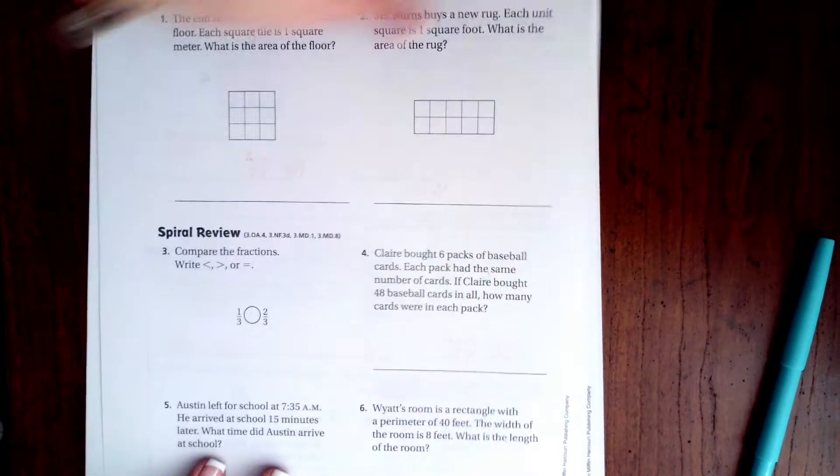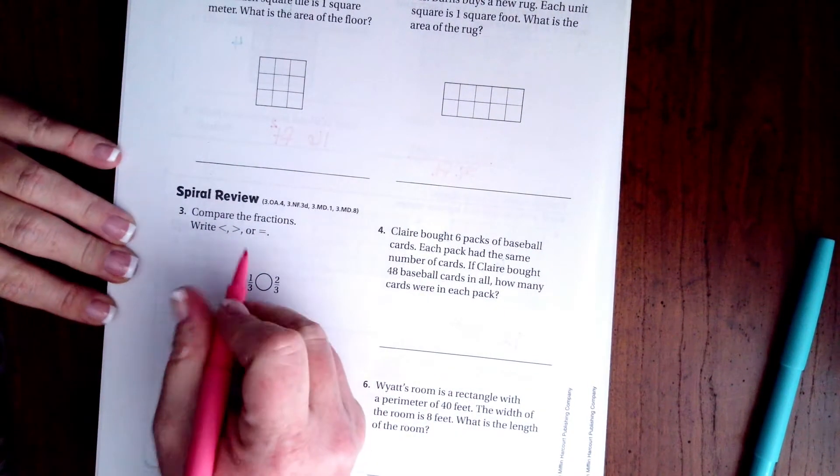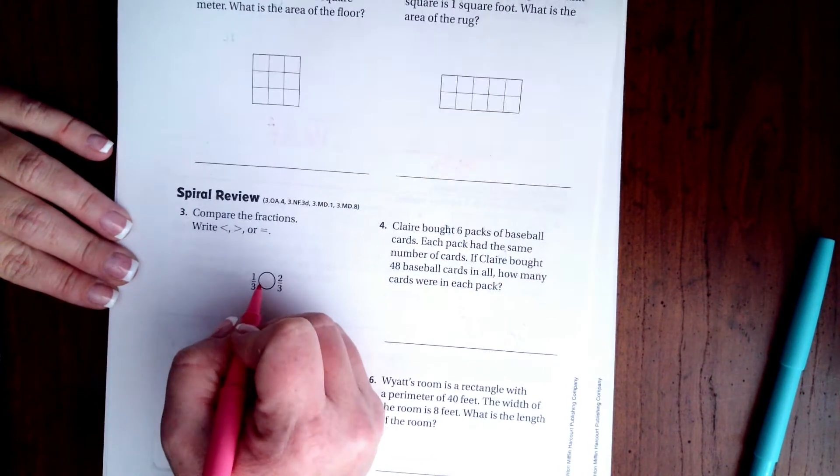We're going to go on to the back where you guys are going to do the lesson check and we are going to do the spiral review. The denominators are the same. Which one is more filled in on top? Well, that's going to be the two, there we go.